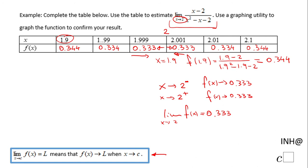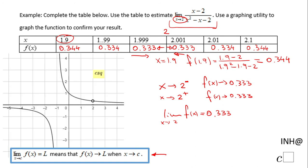I graphed here the function. You're gonna have a hole here. The function is not defined at 2 because it makes the denominator equal to 0. However, when you go close to 2 from the left side or from the right side...